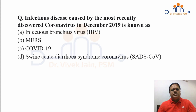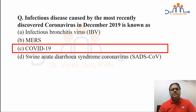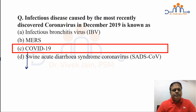First question: the infectious disease caused by the most recently discovered coronavirus in December 2019 is currently known as what? Is it IBV, Middle East Respiratory Syndrome (MERS), COVID-19, or Swine Acute Diarrhea Syndrome coronavirus? It is currently known as COVID-19. When we look at this disease, COVID-19 is actually an abbreviation — it stands for coronavirus disease of the year 2019.